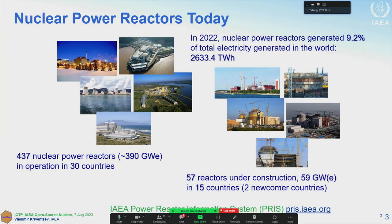Currently we have 437 nuclear power reactors in the world, generating about 400 gigawatts electric of installed capacity. They operate in 30 countries, both developed and developing. We also have an additional 57 reactors under construction with 60 gigawatts electrical together — roughly 1 gigawatt units — in 15 countries, two of which are newcomer countries.